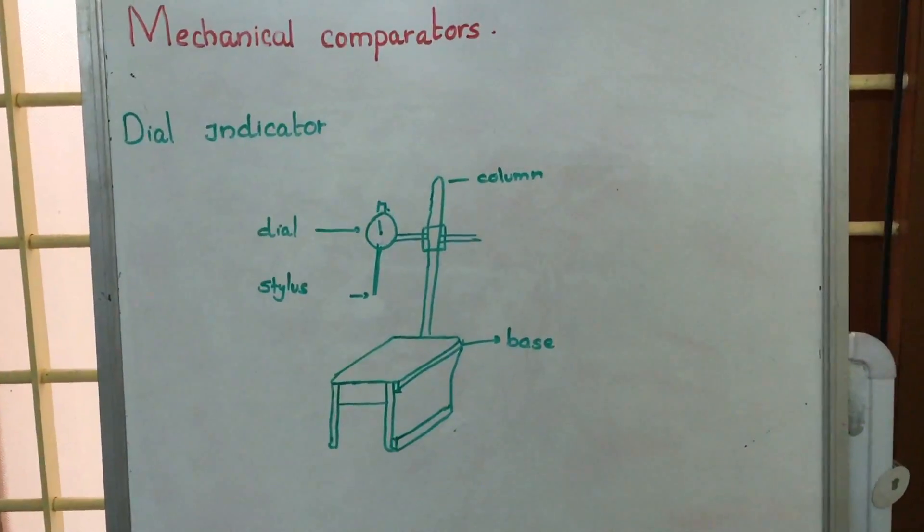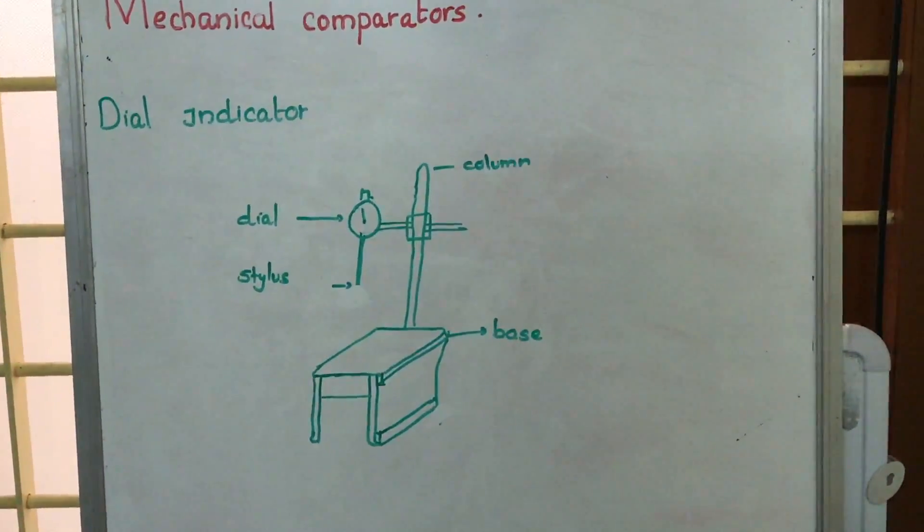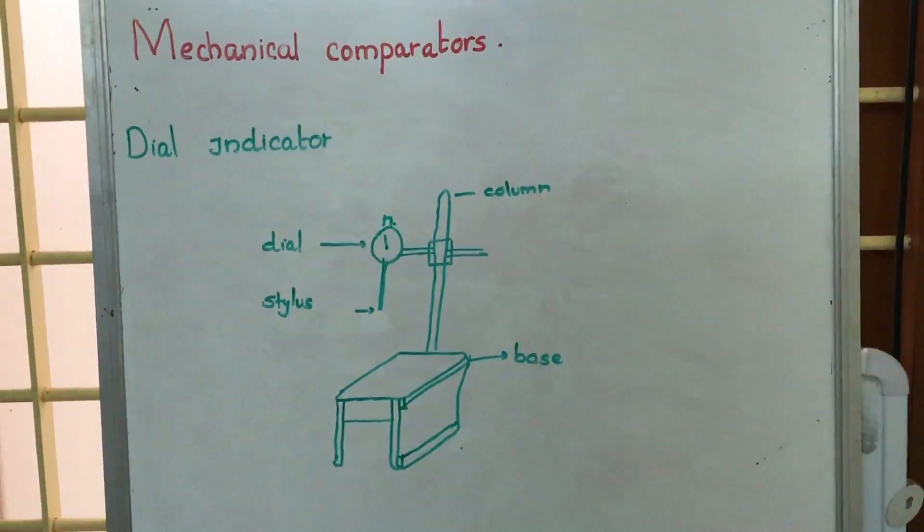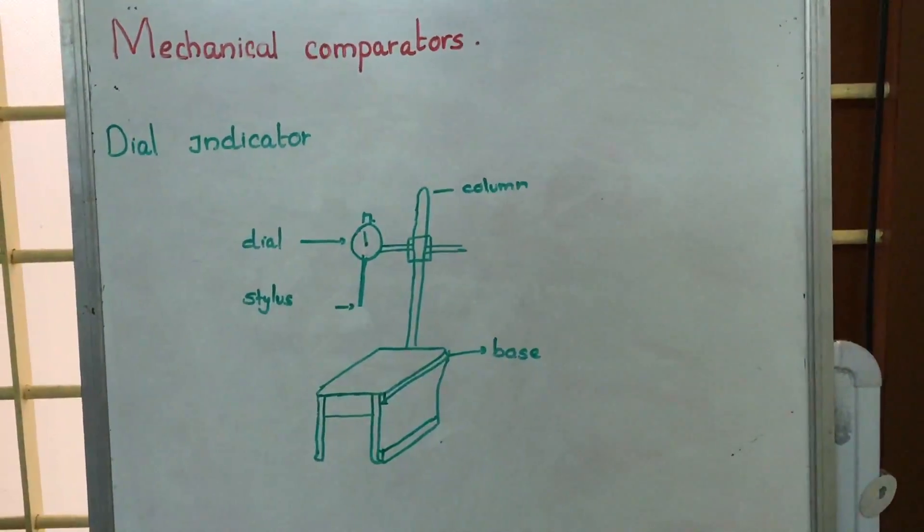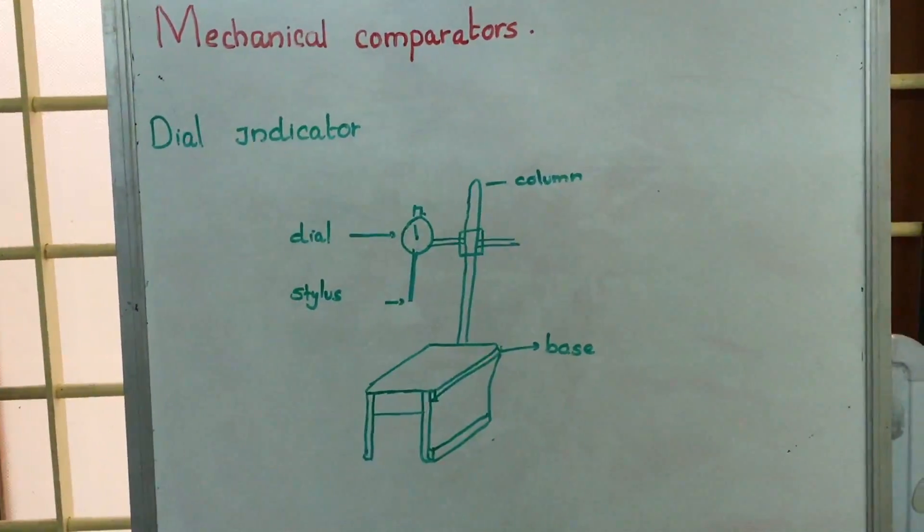So, Mechanical Comparator. Comparator means these are types of instruments by which we are going to compare an ideal or a true measurement with another one.